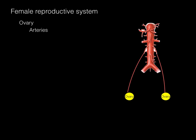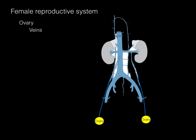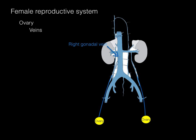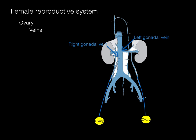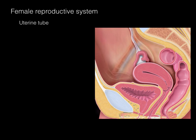The gonadal arteries arise from just below the renal arteries on the aorta. Now the veins are not bilaterally symmetrical — similar to the male. The right gonadal vein brings blood from the right ovary directly into the IVC, while the left gonadal vein rises and goes to the left renal vein and then to the IVC. There's not that bilateral symmetry.